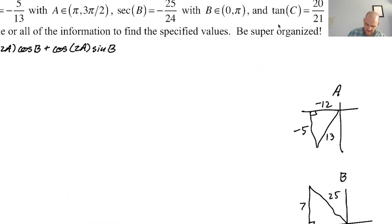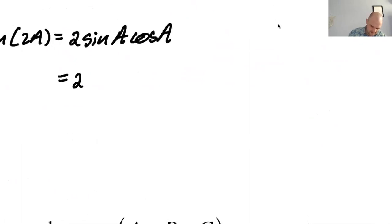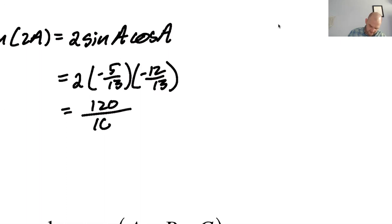So the sine of 2a is going to be 2, the sine of a, the cosine of a. So 2, the sine of a over here, you can see is negative 5 over 13 and the cosine is negative 12 over 13. So 2, negative 5 over 13, negative 12 over 13. And we can use a calculator for that. But it's going to be 120 over 169.